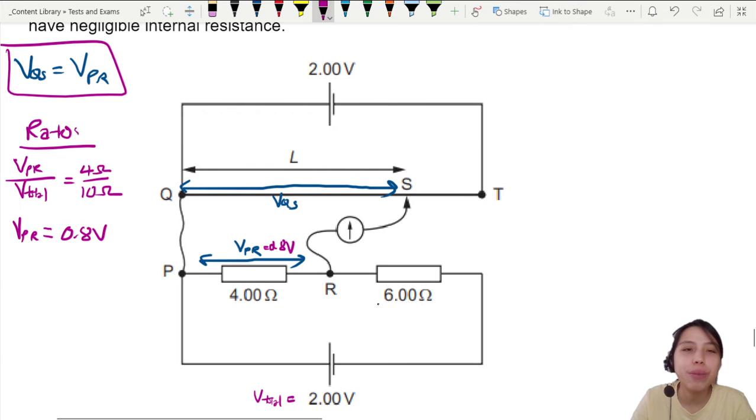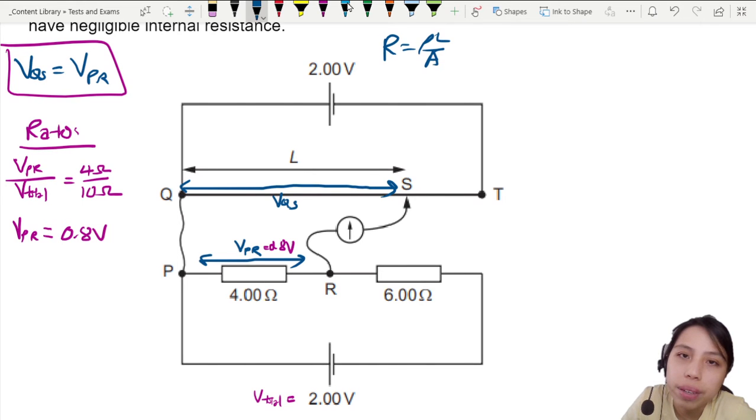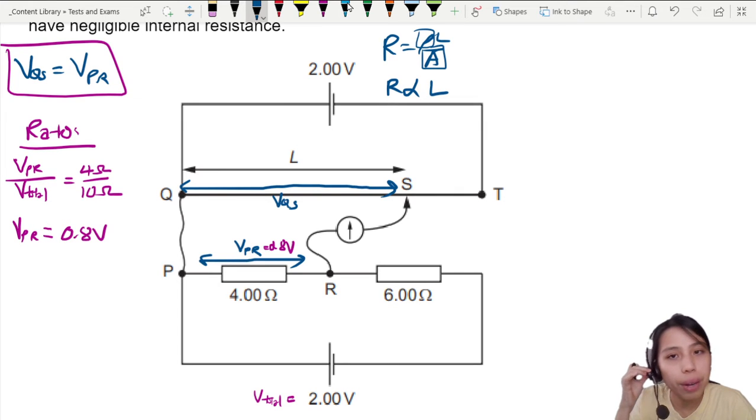Then we go to the top part. We want to find length. We need to relate length to potential. Here's where we need to remember, resistance wire R equals to ρL over A. This whole wire QT, you have to make some assumptions. I assume the same material and same diameter. It doesn't get fatter or thinner. So from there, I can conclude R is proportional to L.